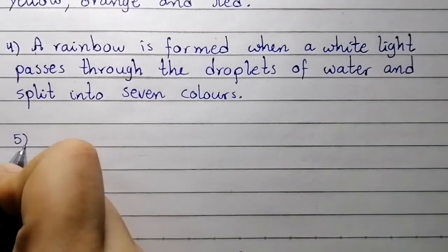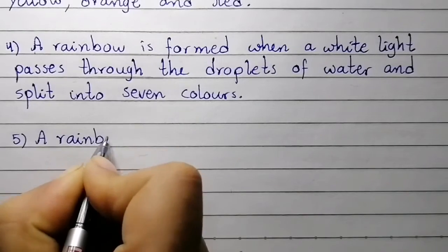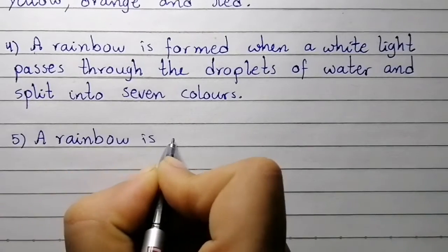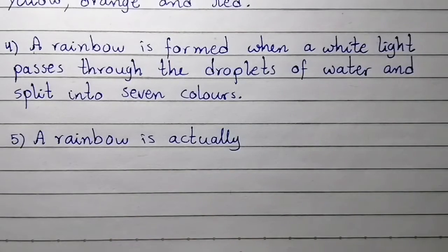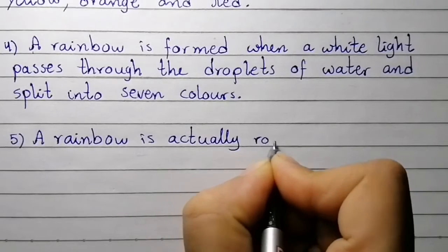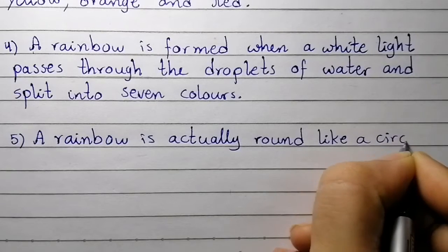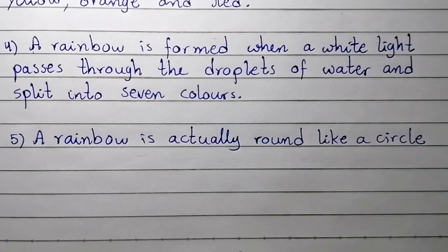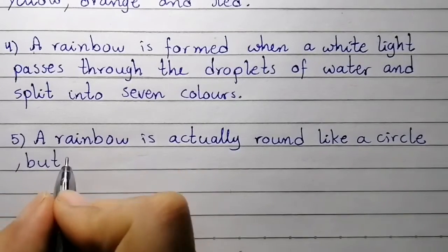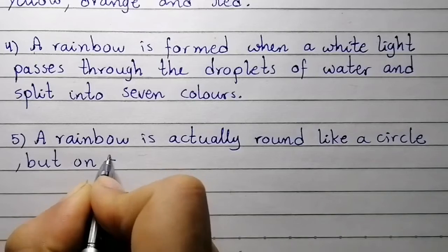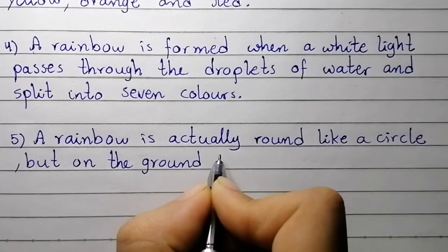Point number five: a rainbow is actually round like a circle, but on the ground the bottom part is hidden.